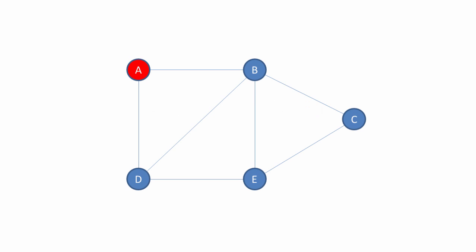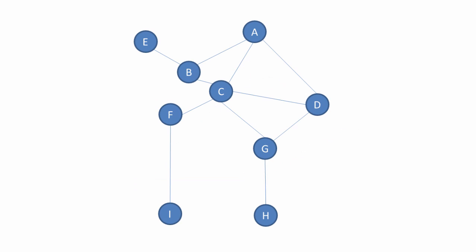Starting with depth first traversal. Depth first traversal involves following a path from a starting vertex until we reach the last vertex on that path. We then backtrack and follow the next path until we reach the last vertex again. We continue in this way until there are no more paths to explore. In the case of our simple graph, we simply follow a path of vertices until we've exhausted all of the vertices in the graph. It's easier to see how this works with a more complex graph.